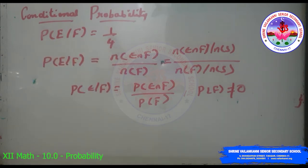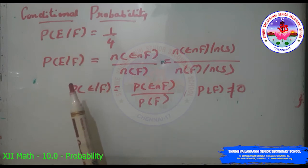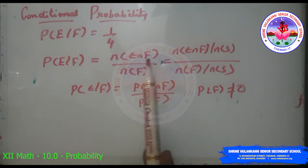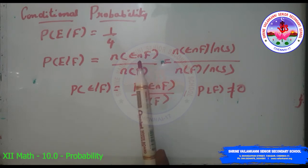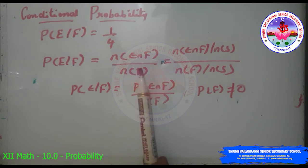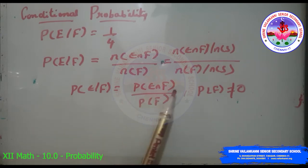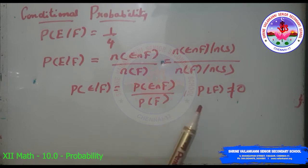The conditional probability of E given that F has already occurred is denoted P(E|F), which equals the number of elementary events favorable to E∩F divided by the number of elementary events favorable to F. This simplifies to P(E|F) = P(E∩F) / P(F), where P(F) is not equal to zero.